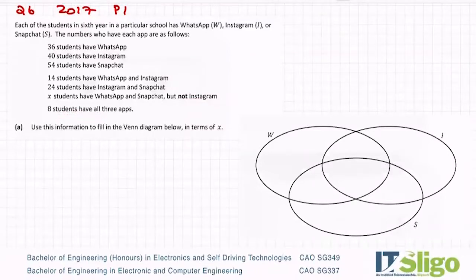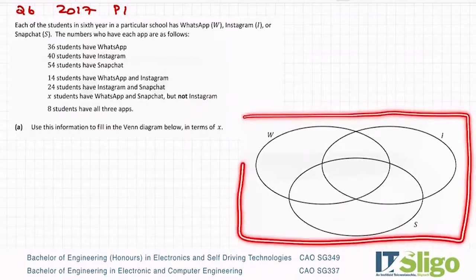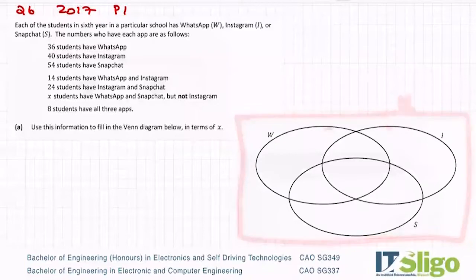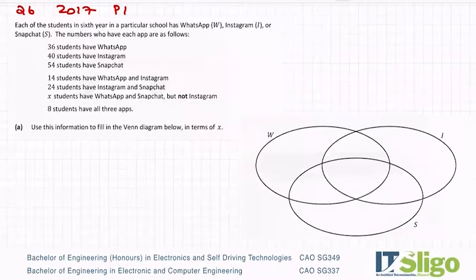The first thing I notice is that there's no box around this one, like there was in the other two examples that we had, which means that there are no students who don't have one of the apps. So all of the students who were surveyed here have some of the apps. So no number goes on the outside.